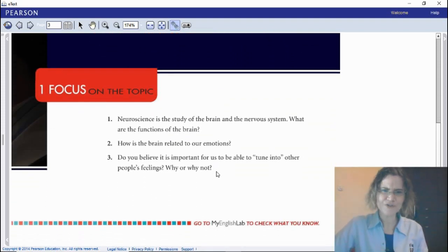Number one: Neuroscience is the study of the brain and the nervous system. What are the functions of the brain? Number two: How is the brain related to our emotions? Is there any connection? And number three: Do you believe it is important for us to be able to tune into other people's feelings? Why would that be important, and why not? Wow, heavy questions, I'd say.